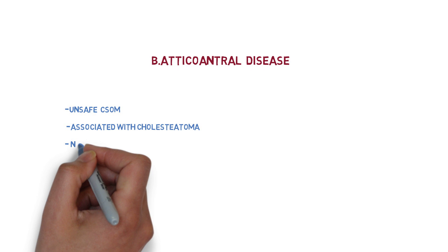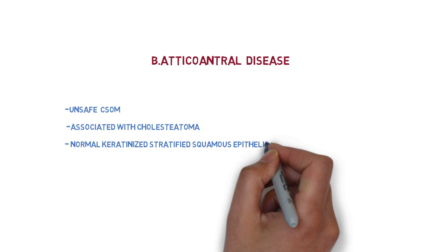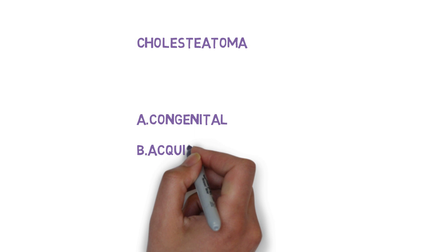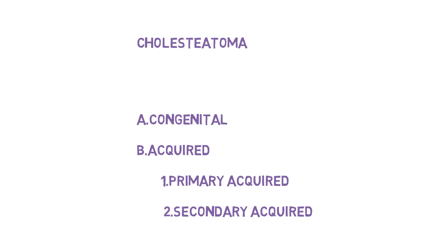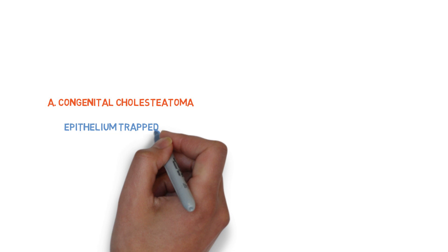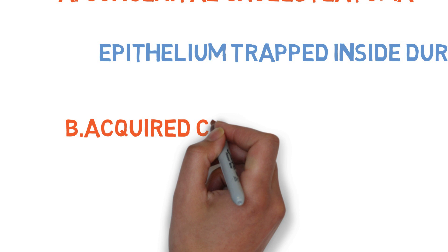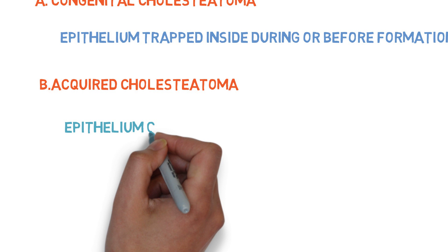This disease is mainly associated with cholesteatoma. Cholesteatoma is normal keratinized stratified squamous epithelium present in an abnormal place in the middle ear. The types of cholesteatoma are: first, congenital; and second, acquired, which has two subtypes — primary acquired and secondary acquired. In congenital cholesteatoma, epithelium is trapped inside during or before the formation of the middle ear cleft, i.e., before birth. In acquired cholesteatoma, the epithelium enters the middle ear after birth.